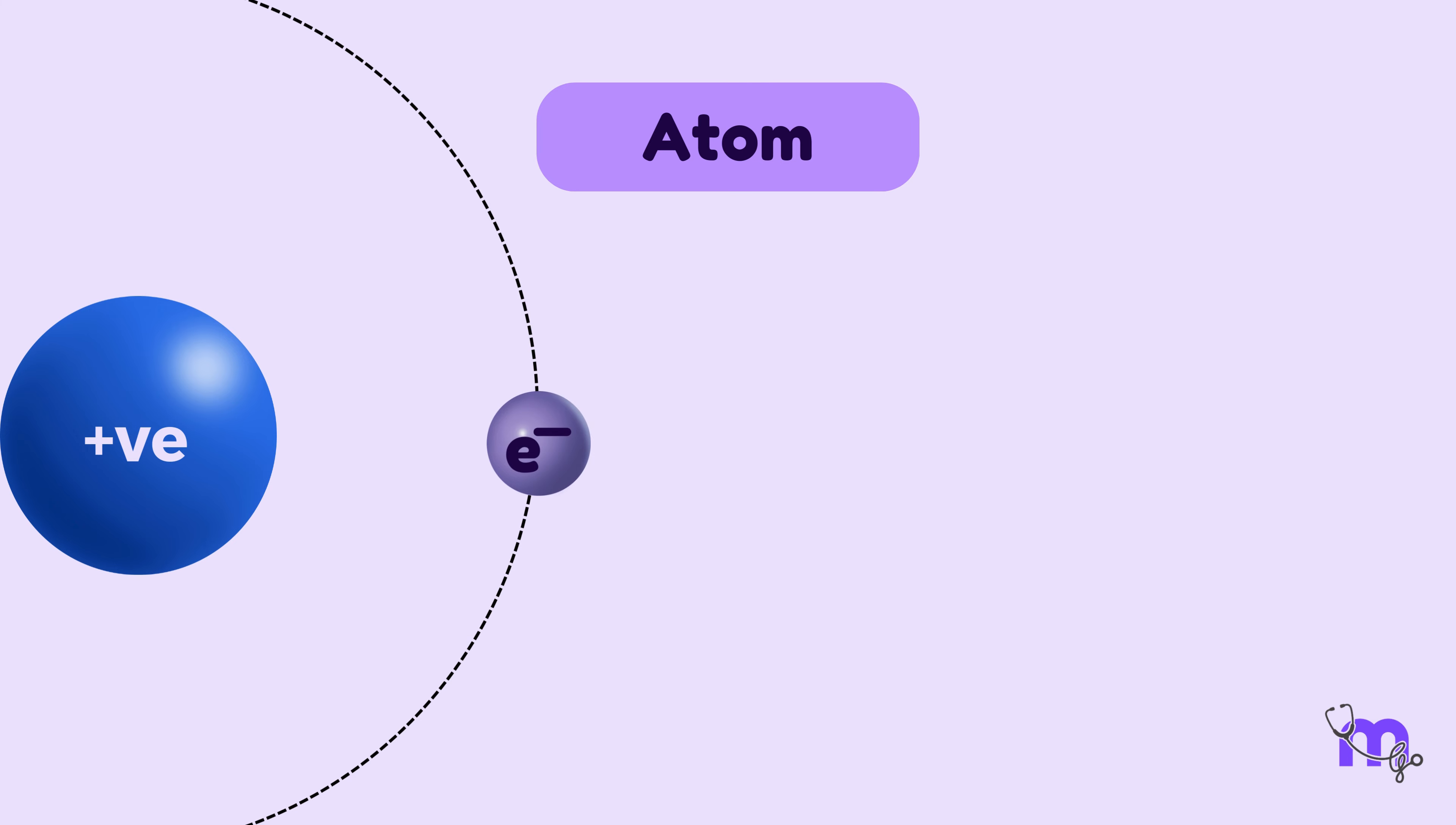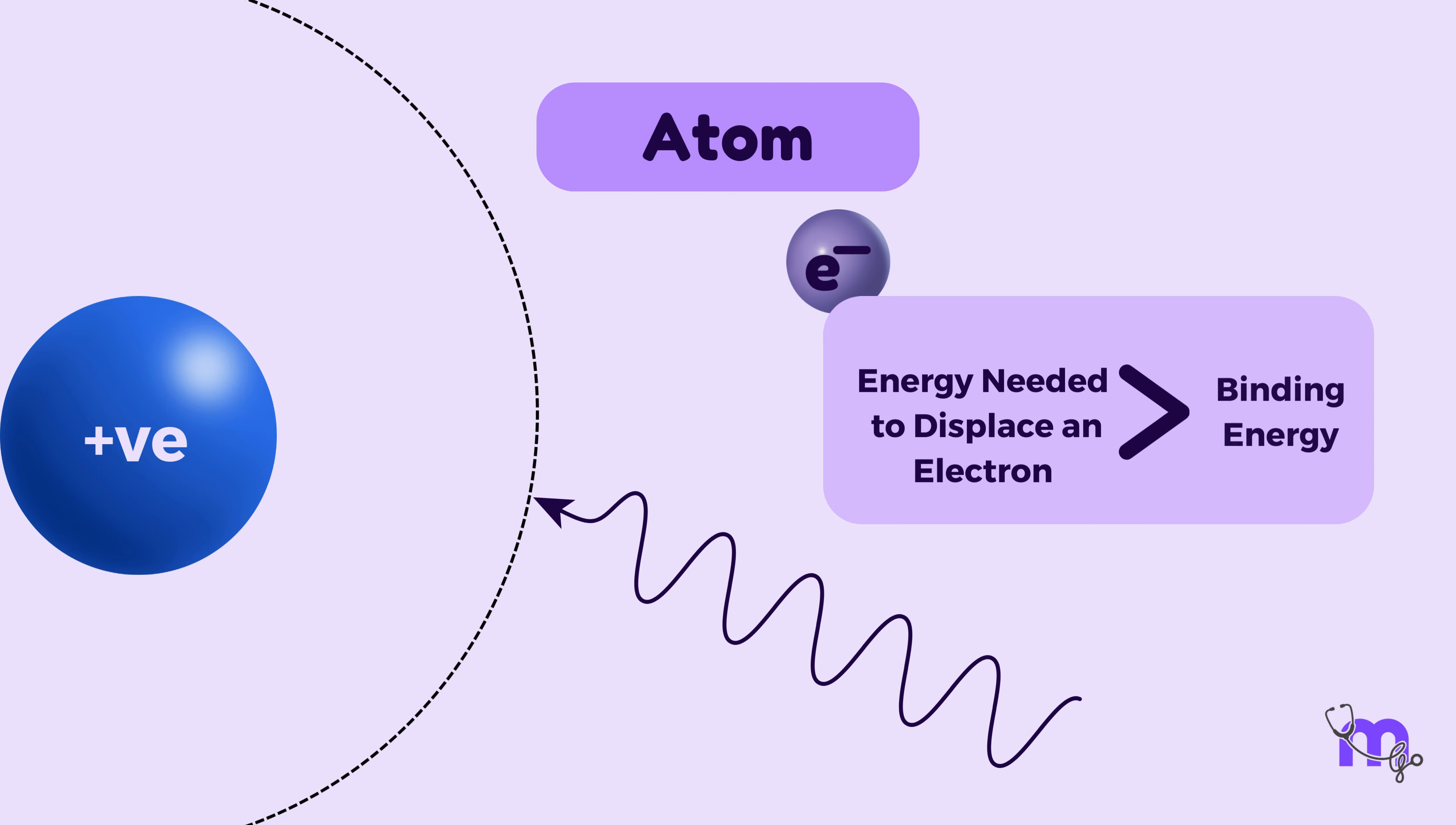So, if an electron needs to be displaced from its path or shell, the energy required to do so will have to exceed its binding energy.